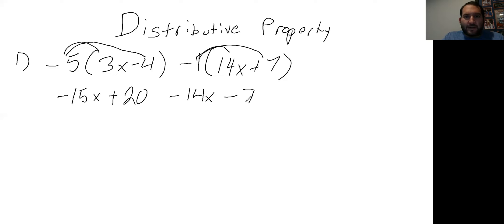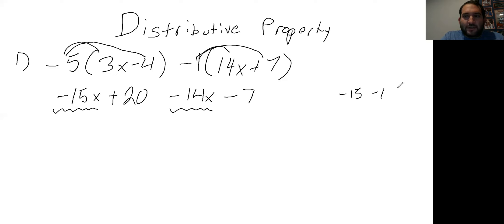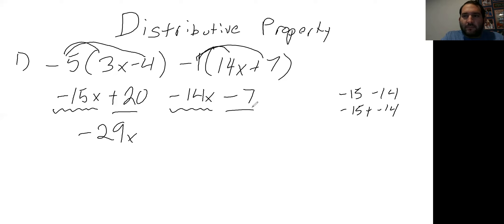Now we're left with negative 15x plus 20 minus 14x minus 7. We want to combine our like terms — x's go with x's, numbers go with numbers. Negative 15x minus 14x is like negative 15 plus negative 14, which becomes negative 29x. And positive 20 minus 7 equals 13, so we put a plus sign. The result is negative 29x plus 13. That's the first example of the distributive property.